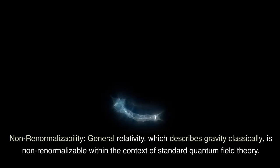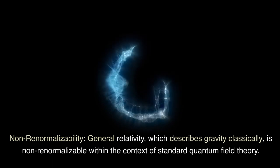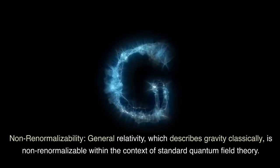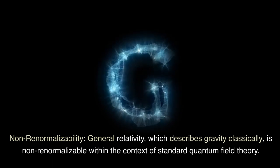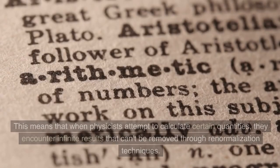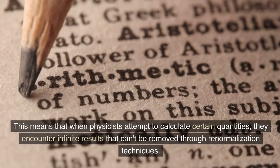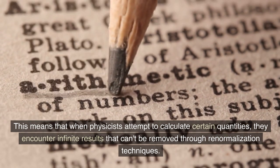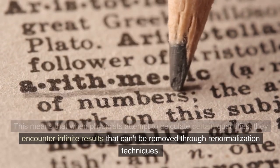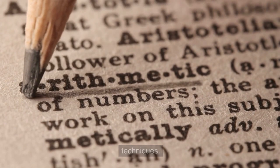Non-renormalizability. General relativity, which describes gravity classically, is non-renormalizable within the context of standard quantum field theory. This means that when physicists attempt to calculate certain quantities, they encounter infinite results that can't be removed through renormalization techniques.